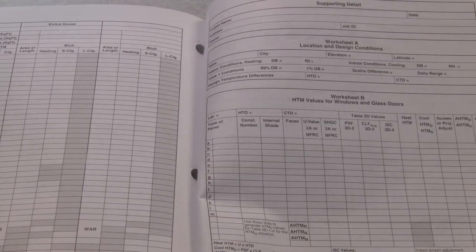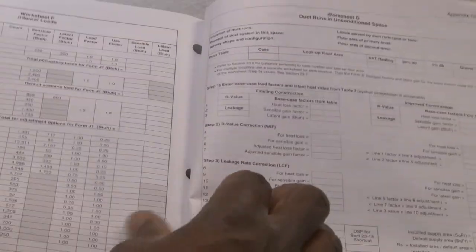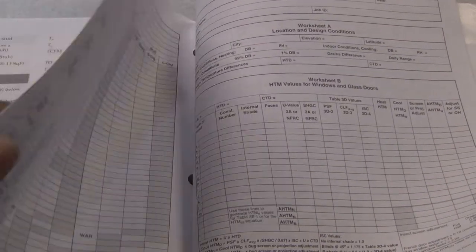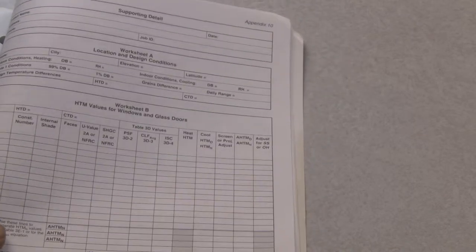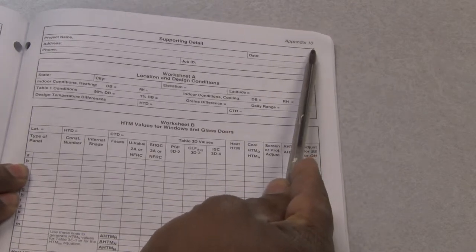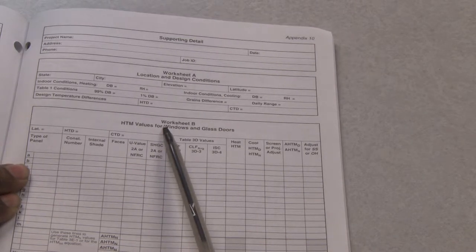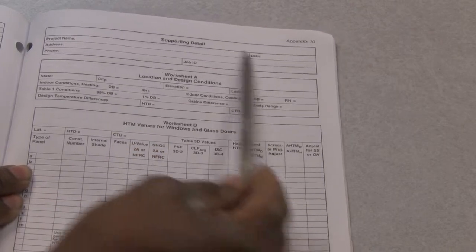If you look at the different worksheets, here we go. If you look at it, this is a copy of appendix 10, this is a copy of worksheet A and worksheet B. It will be on that one sheet.